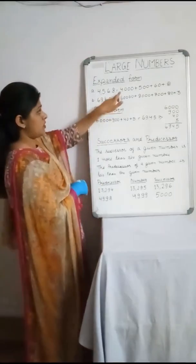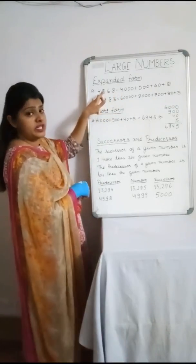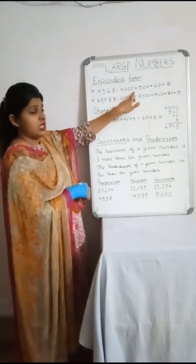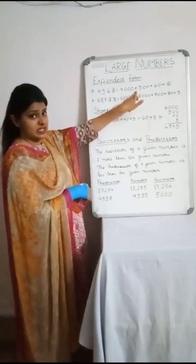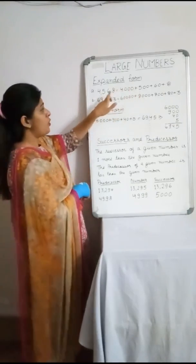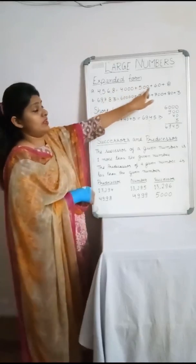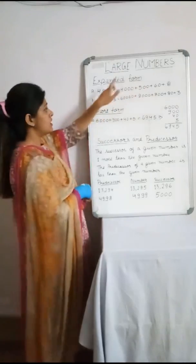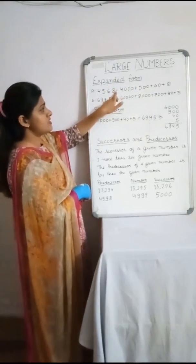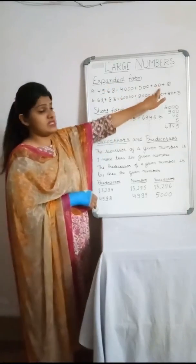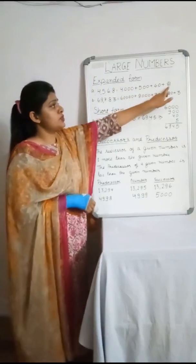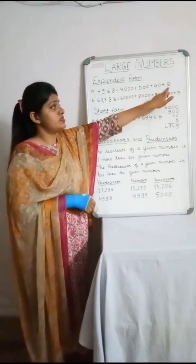For the number 4,568: four has three digits after it, so we write 4,000. Then five has two digits after it — 500. Then six has one digit after it — 60. Then plus sign. And the last digit, eight, has no zeros — we write it as eight. So the expanded form is 4,000 + 500 + 60 + 8.